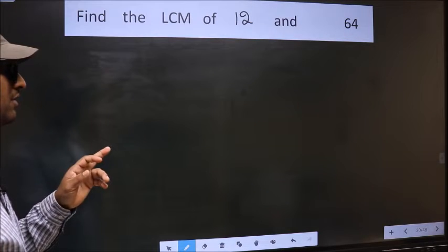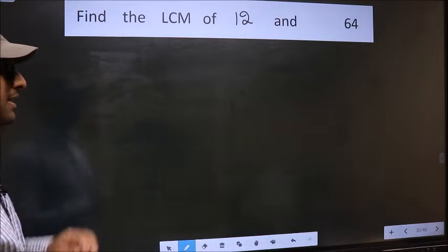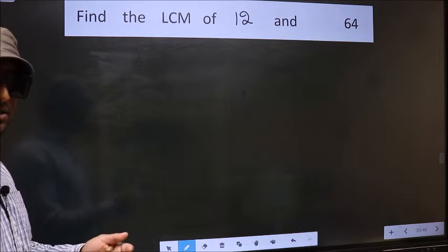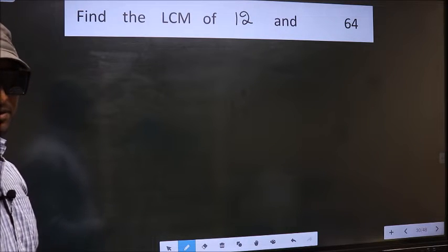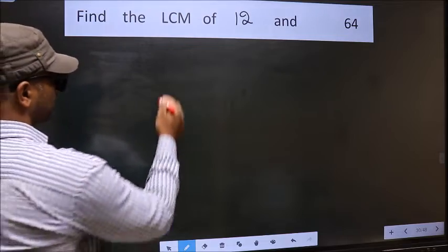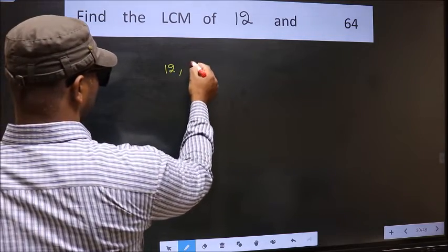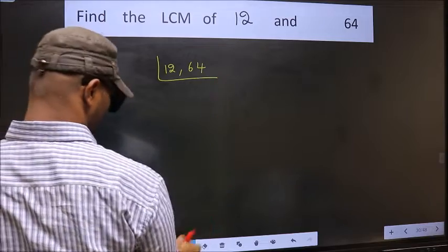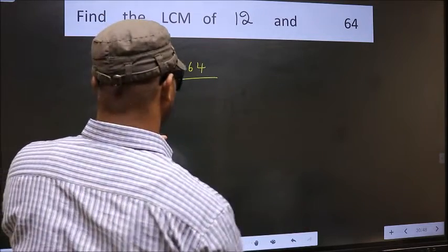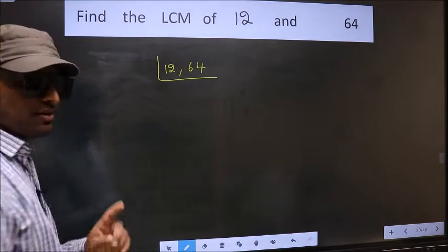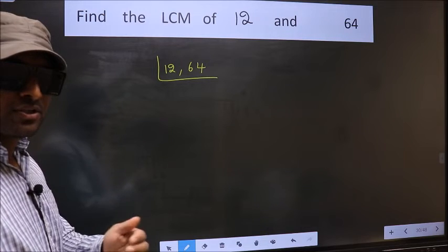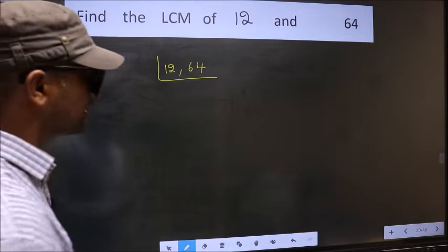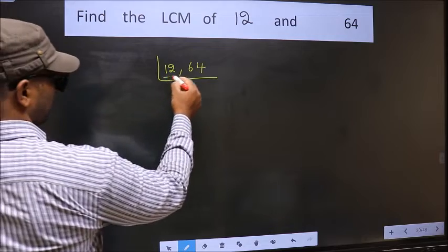Find the LCM of 12 and 64. To find the LCM, first we should frame it in this way: 12 and 64. This is your Step 1. Now you should focus on the first number, which is 12.